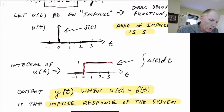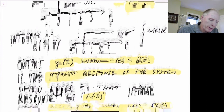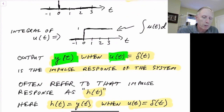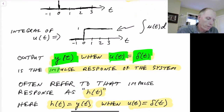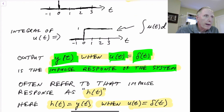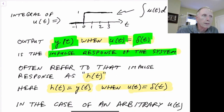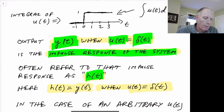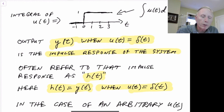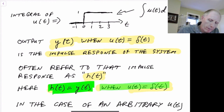So when y of t is the output when u of t is an impulse, then we say that y of t is the impulse response of our system. We often refer to that impulse response as h of t. So often we say h of t will be the impulse response of a system — it's common to use h of t. So h of t is y of t when u of t is an impulse.